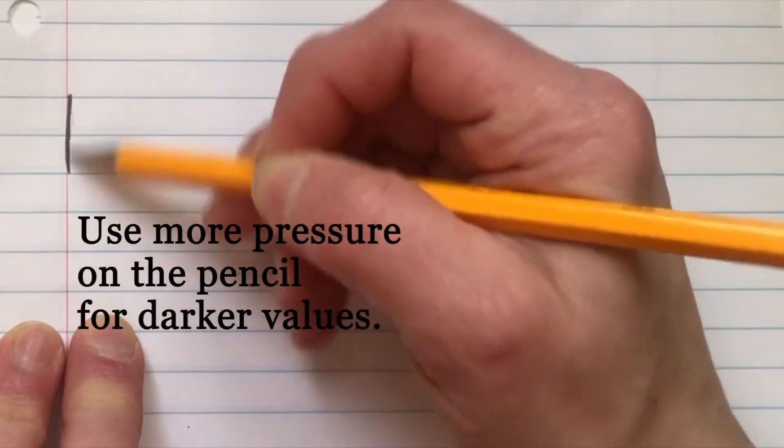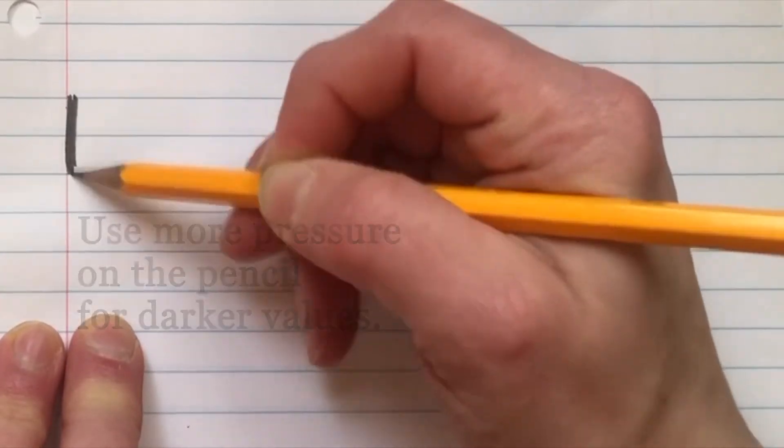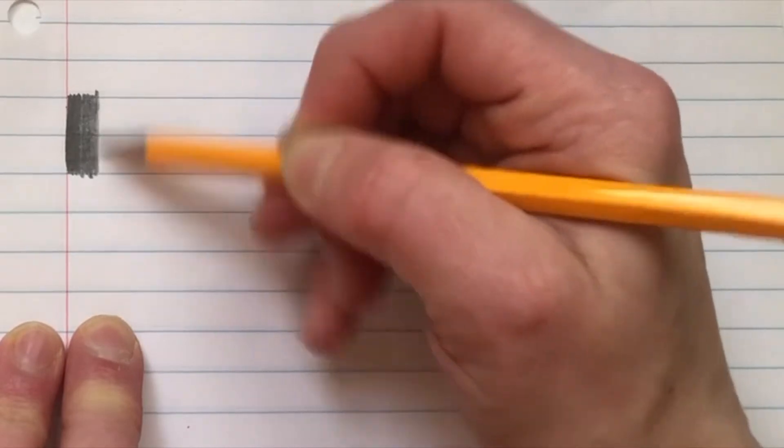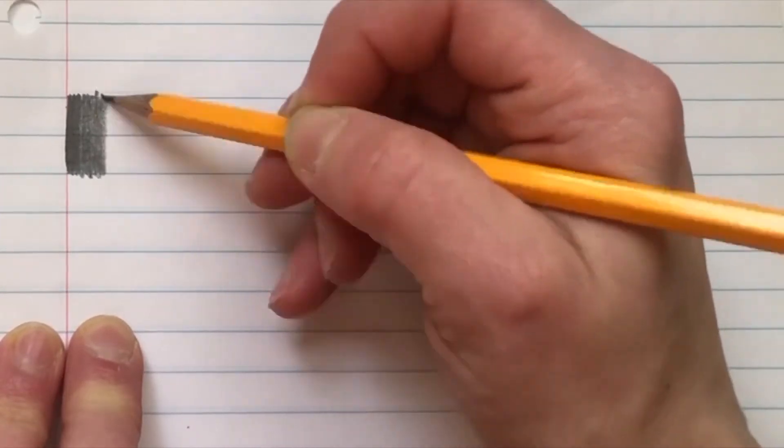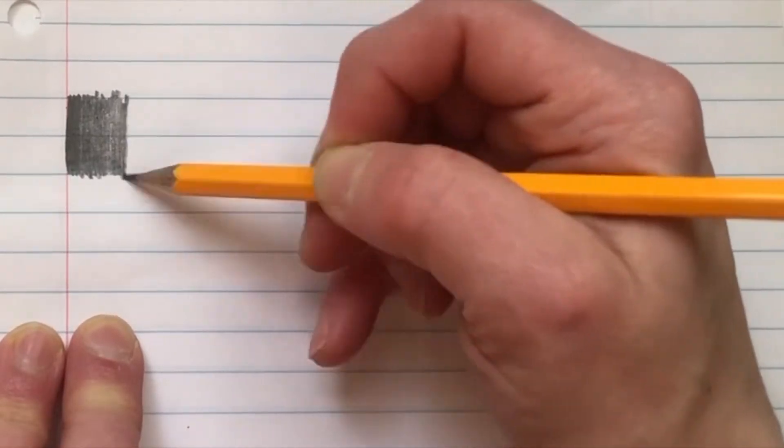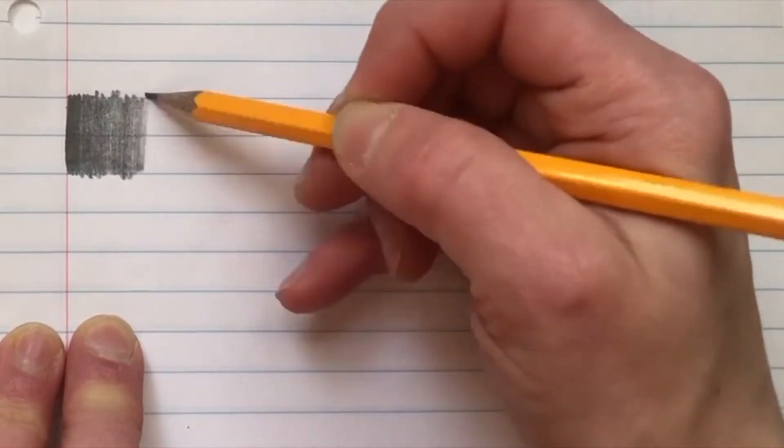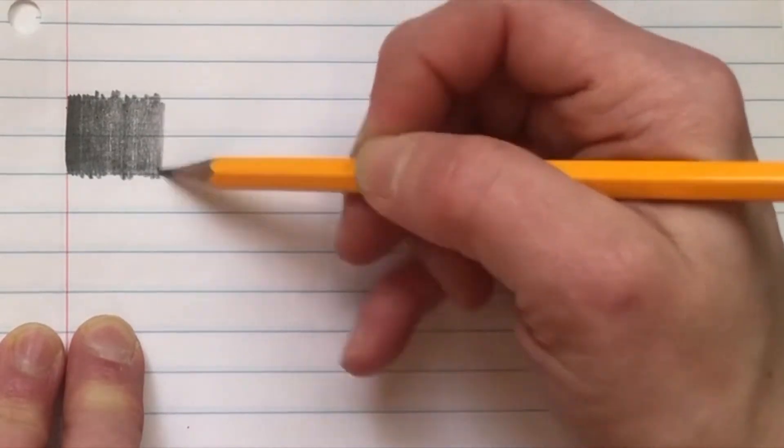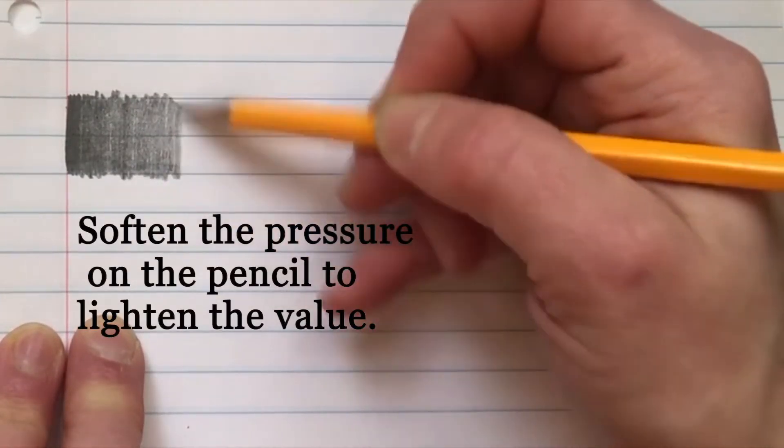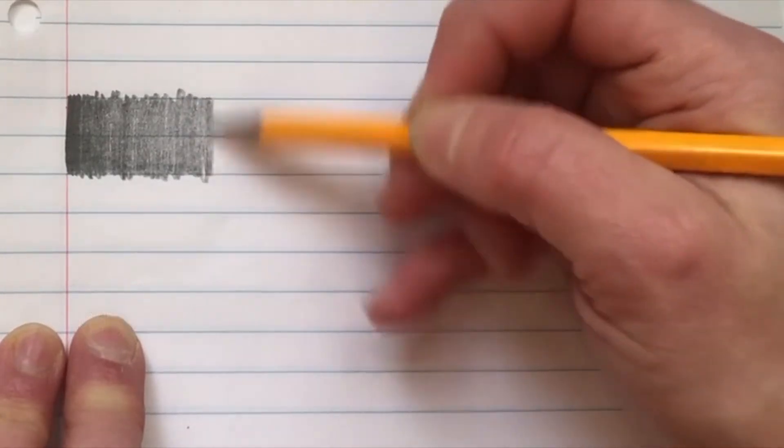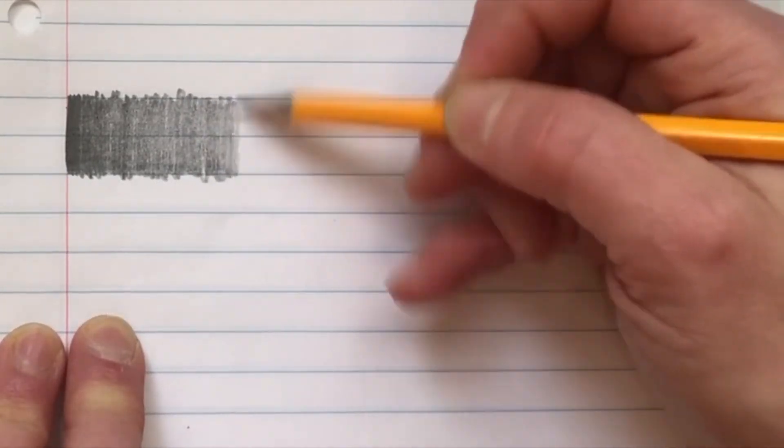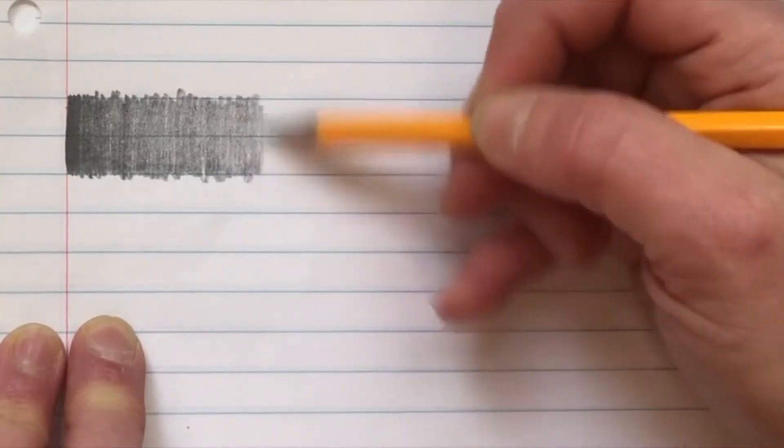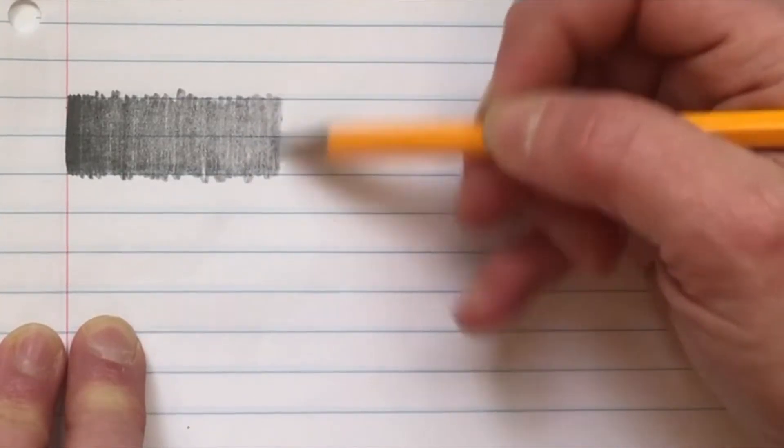Start with your darkest value. Make sure that you're consistent. Try to stay in the line.